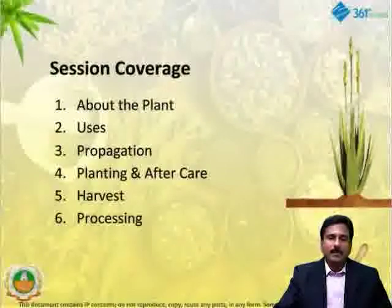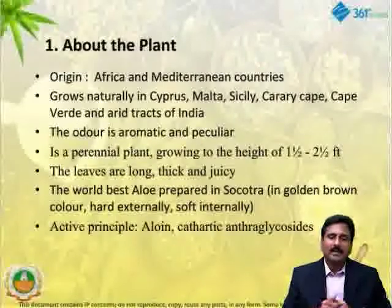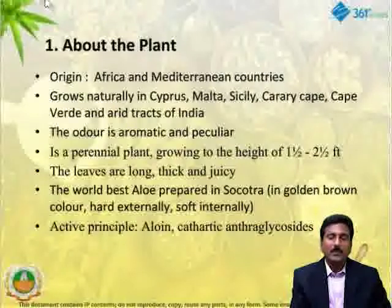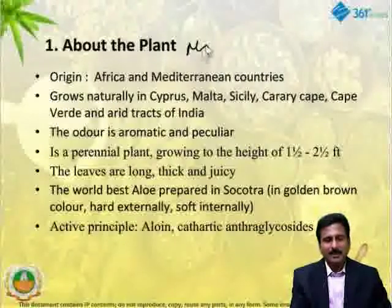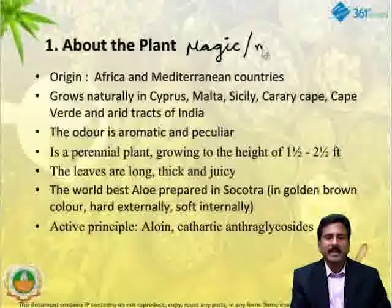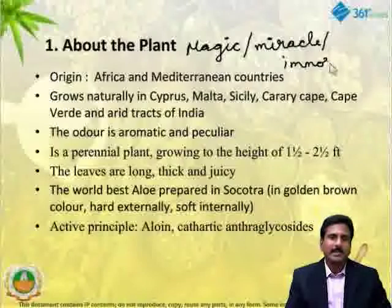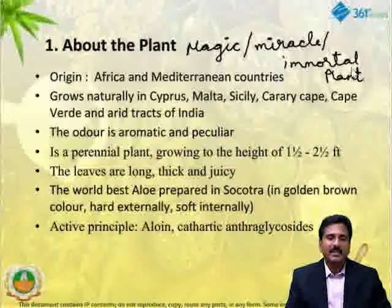Aloe vera is normally referred to as a magic plant, a miracle plant, an immortal plant — different names we have — and there are scientific reasons for naming this plant. The origin of aloe vera is Africa and Mediterranean countries, but it has been localized and distributed all over the world, especially in India.